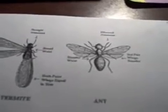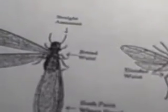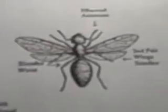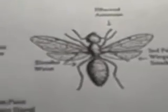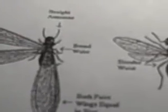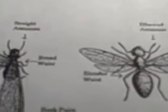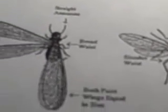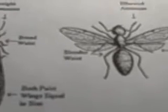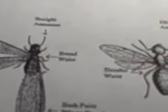We get calls all the time about termites or ants. That's the actual swarmer termite. Let me show you what this looks like — that's a swarmer termite, that's a swarmer ant. We'll start from the top to the bottom. The biggest difference is the wings, but we'll get to that in just a second.